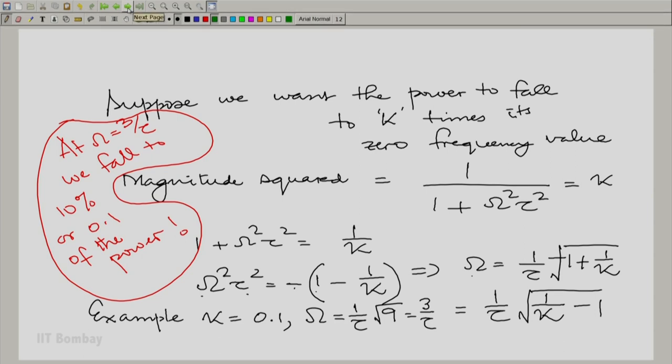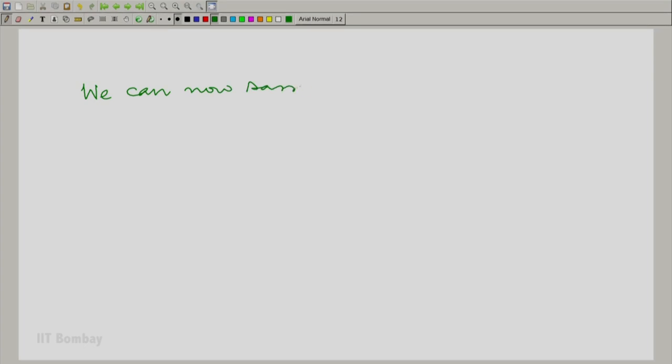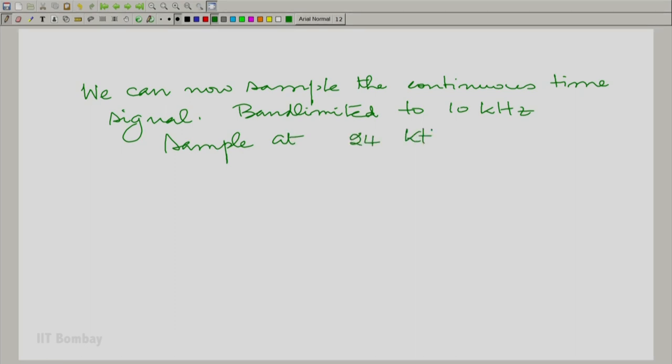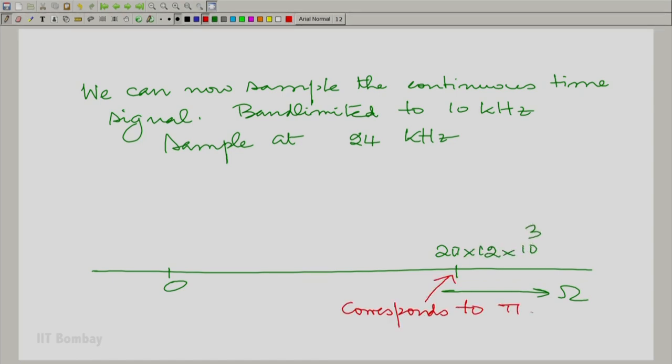So, that is what we are really talking about here now. Essentially you could now think of a circumstance where you restrict this response. We can now sample that signal. Now, it is band limited to 10 kilohertz. So, sample at more than twice. Let us sample it at 24 kilohertz. So, now what is the situation? On the omega axis, 2 pi into 12 corresponds to pi equal to omega. So, corresponds to small omega equal to pi.